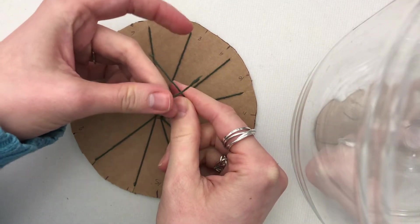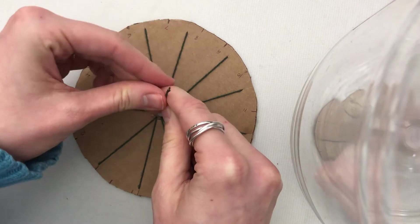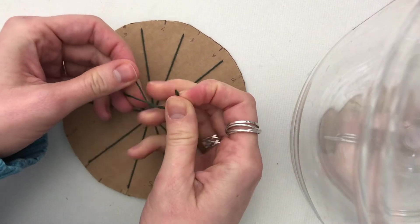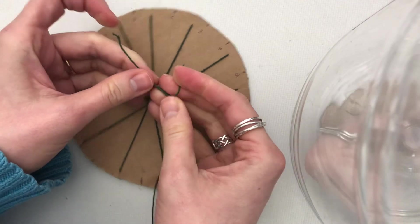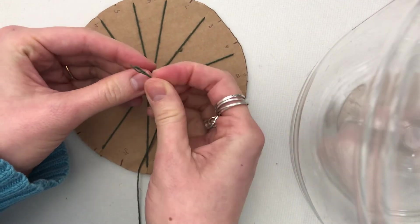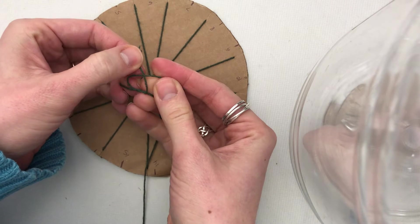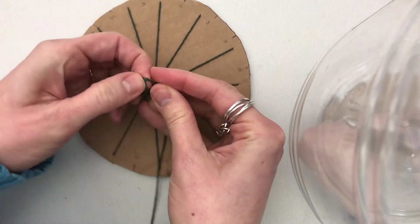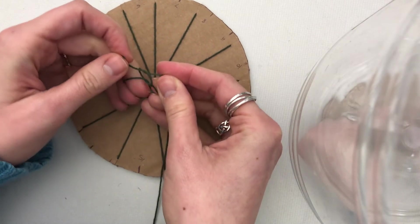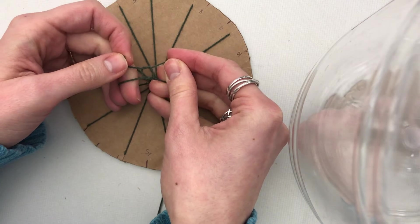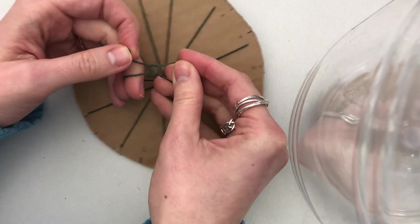Square knot: when you go left over right and tuck your string around—left over right and under—and then you're going to reverse it. So now you're going to go right over left and under. It makes kind of like a square when you pull it.